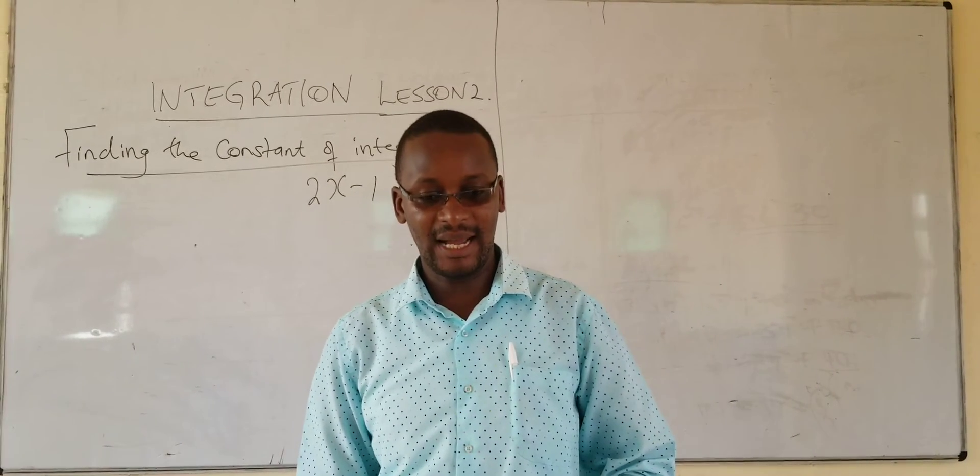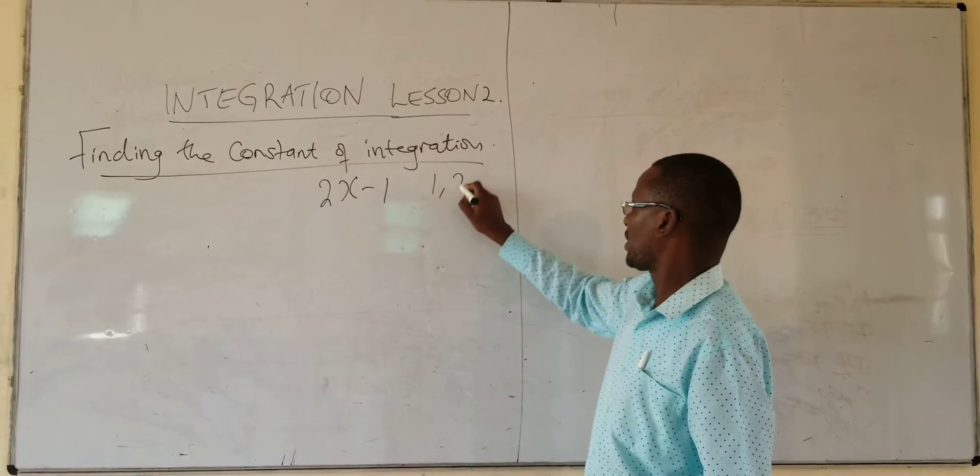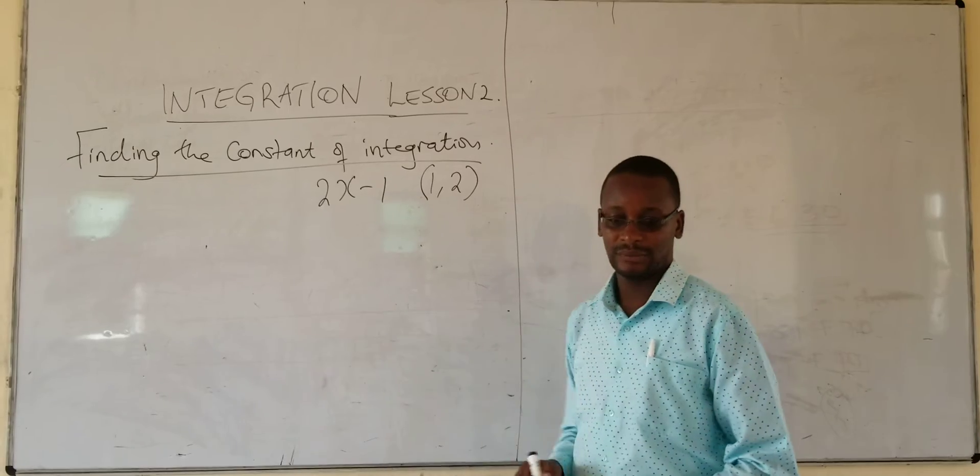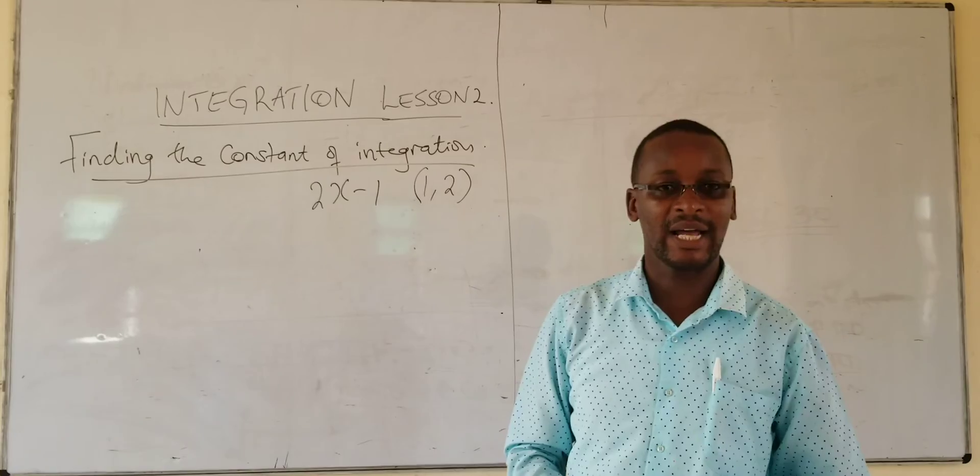Given that the curve passes through the point (1, 2), find the equation of the curve.